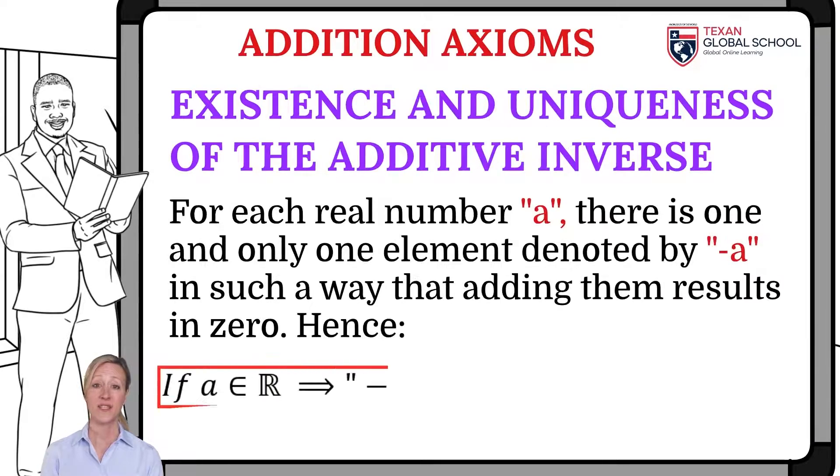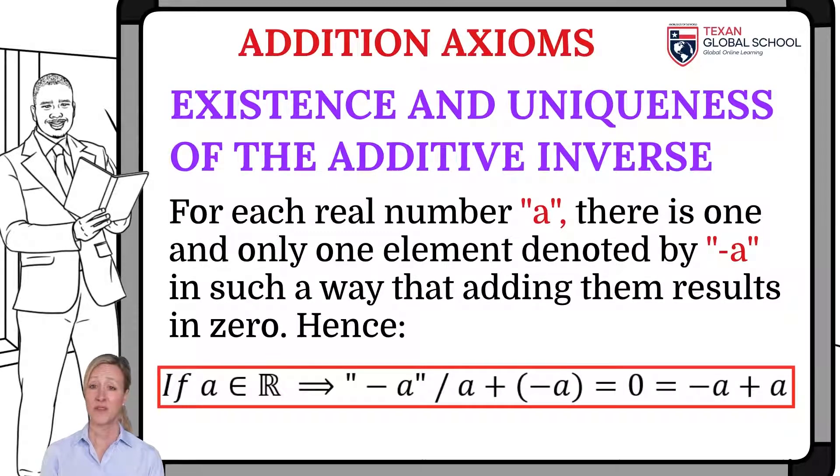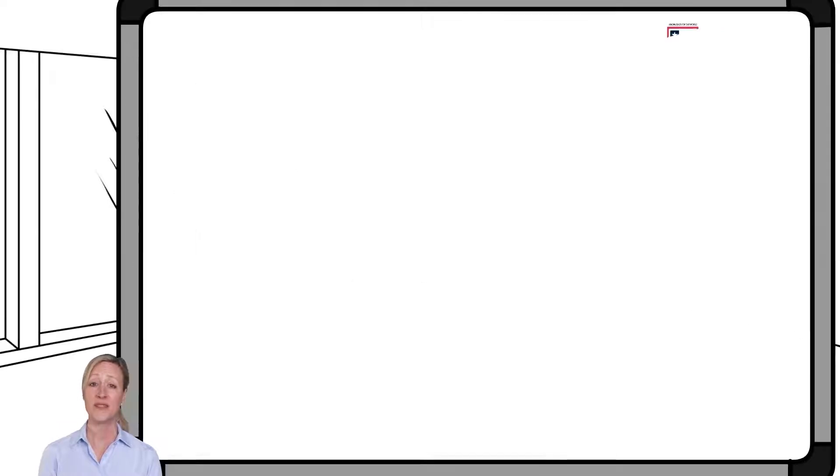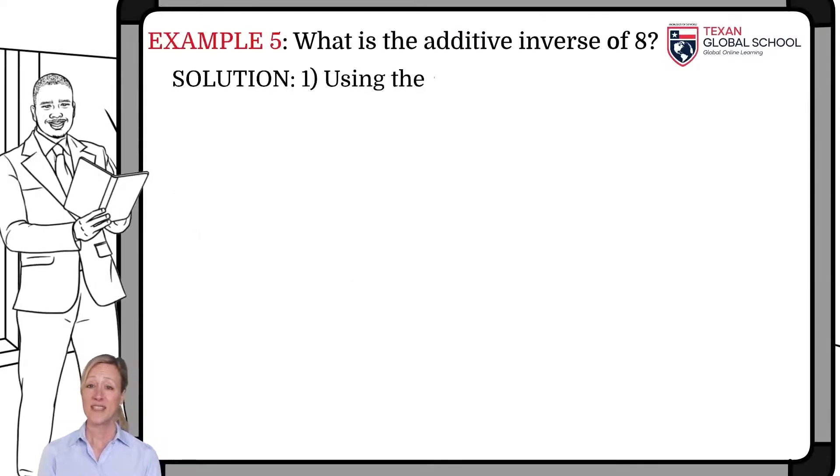The last axiom of addition indicates that for each real number a, there is one and only one element denoted by negative a, in such a way that adding them results in 0.